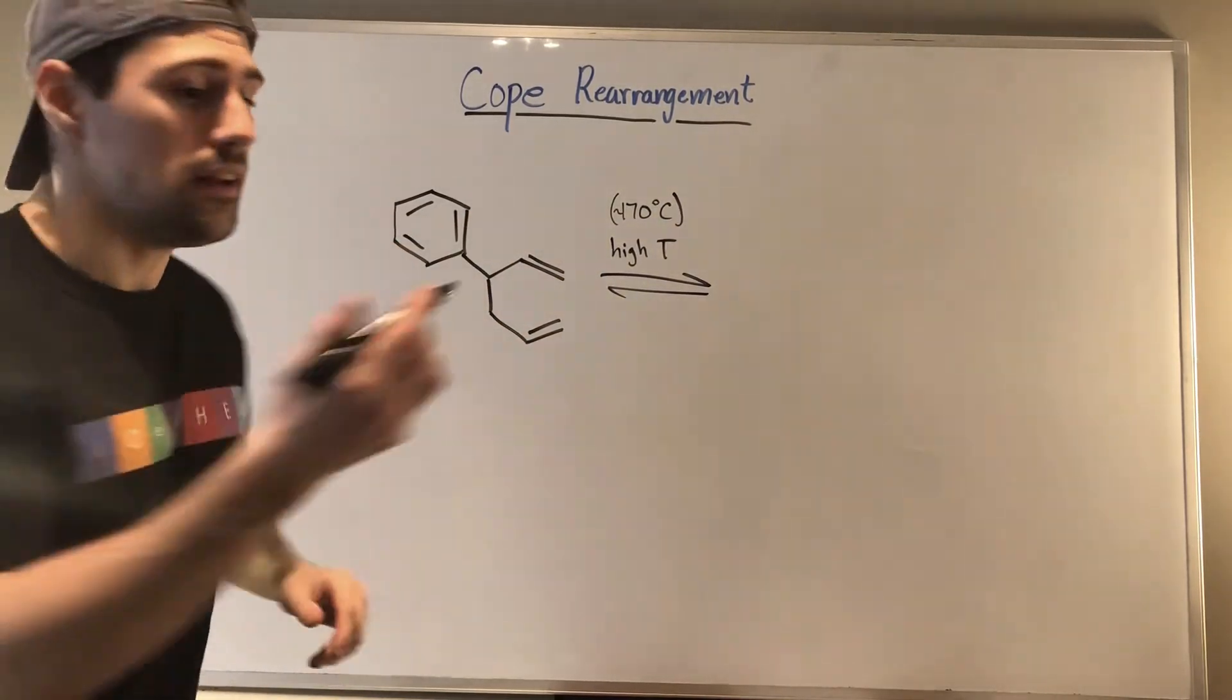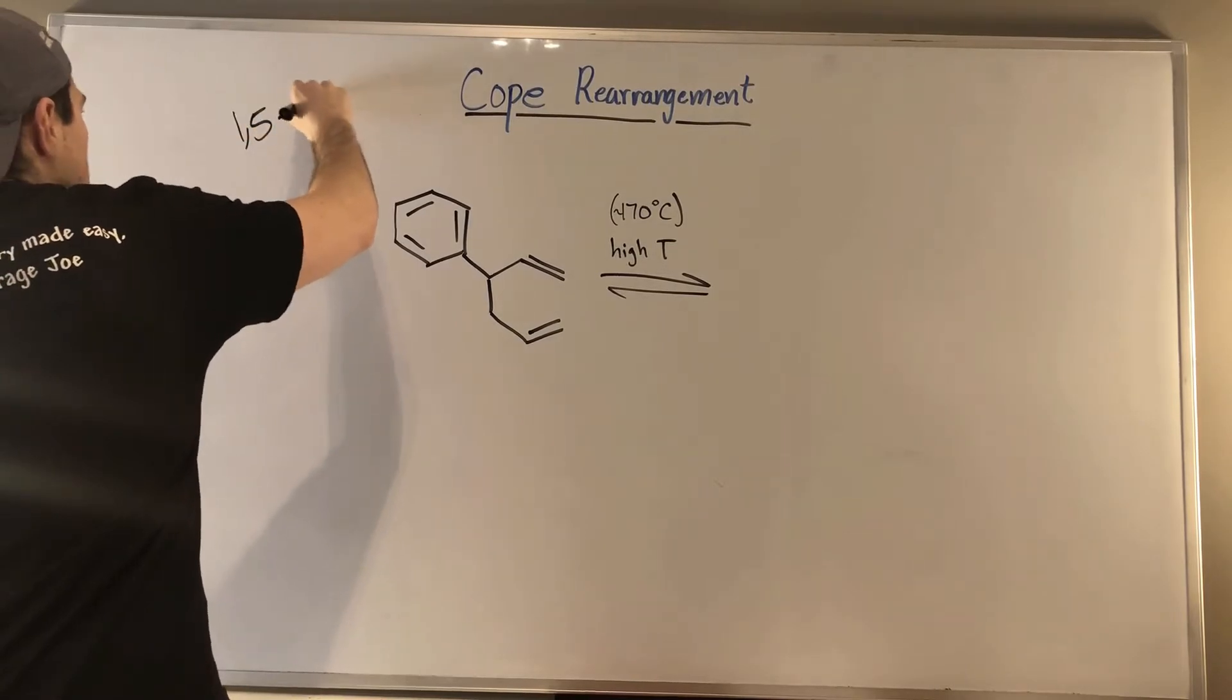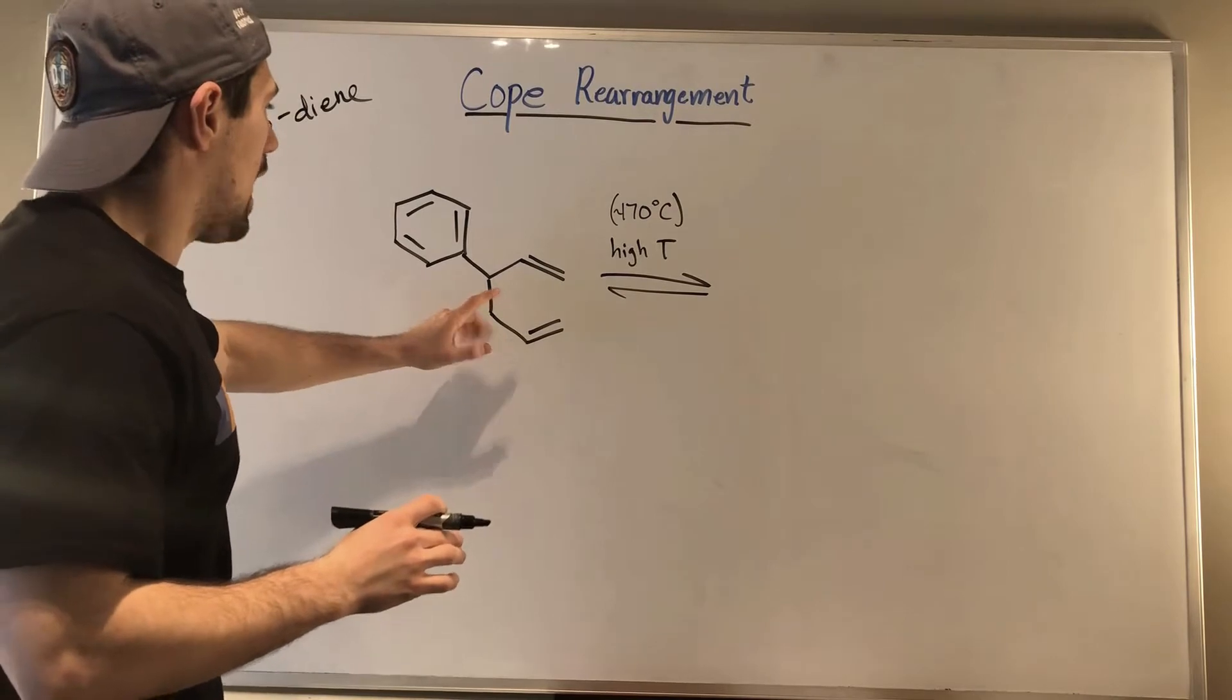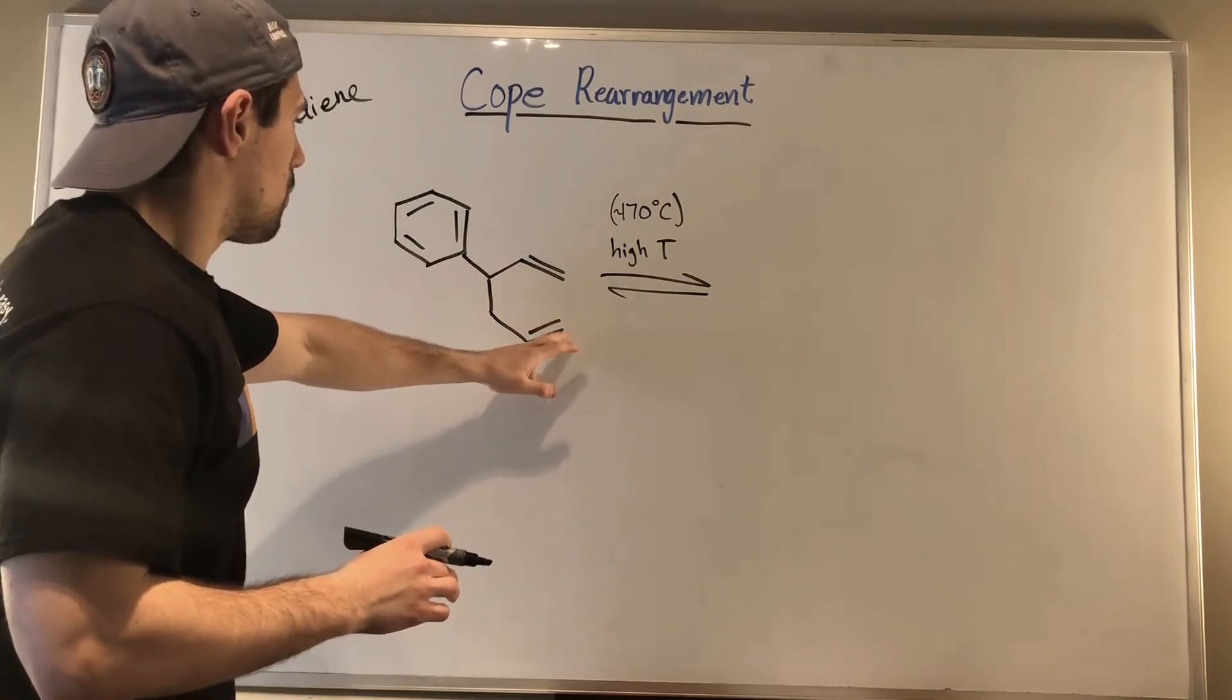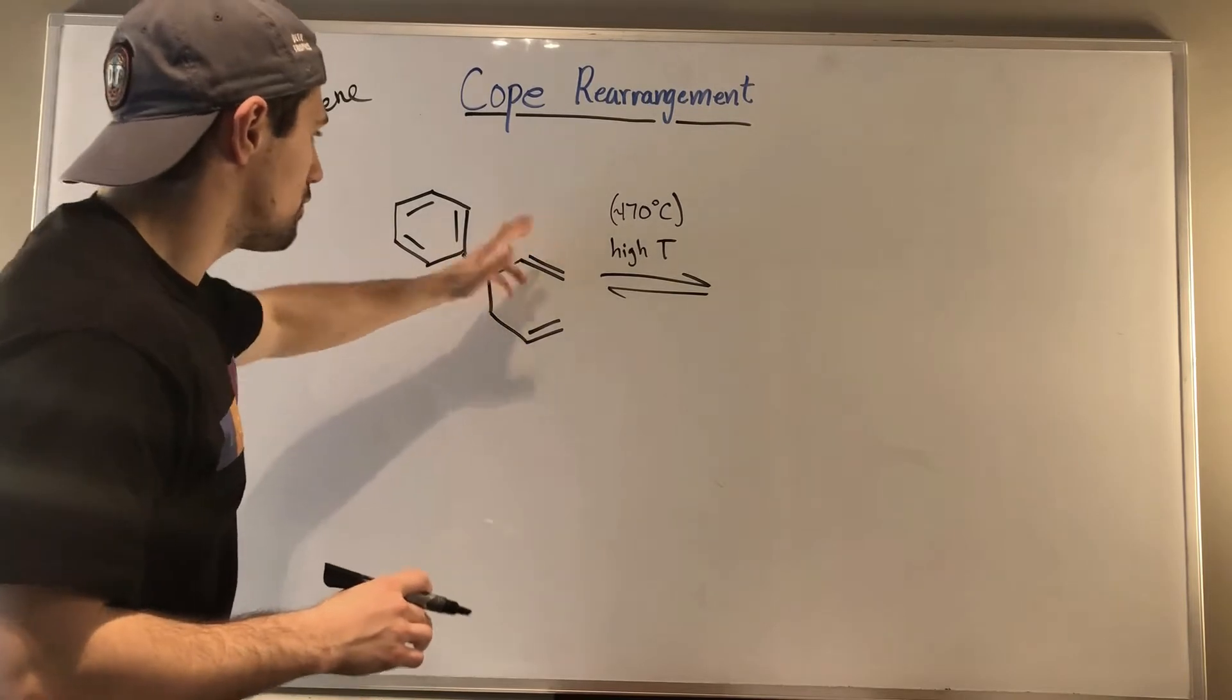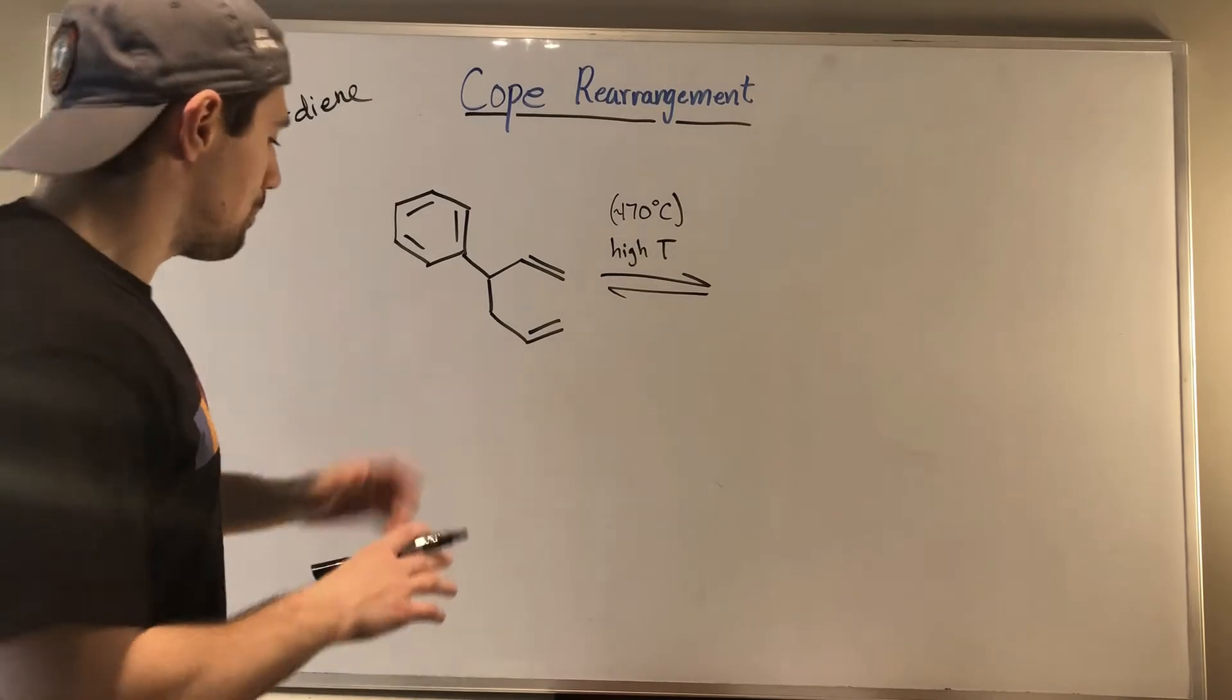And what you're going to be looking for is the same pattern. You're going to have a one, five diene type deal. You're going to have two double bonds that you're going to be working with, and they're going to be separated by one, two, three, four, five. So however you want to count, they're five positions away.